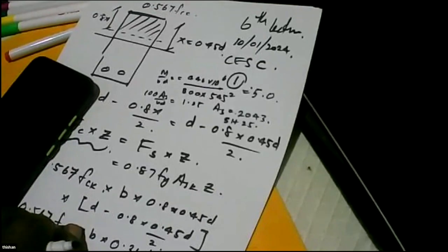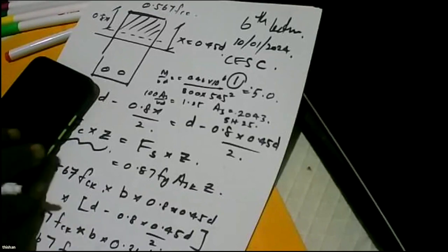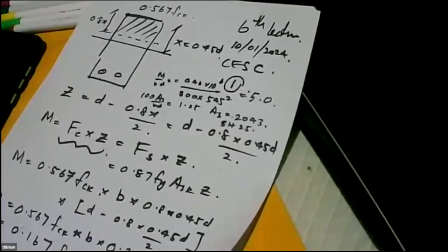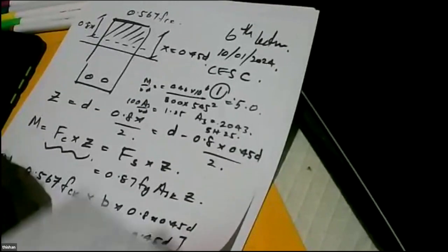Can you believe it? That's the kind of change — that's the amount of steel variation — that can occur when you don't think carefully. So we must always see how to optimize. When you are selecting member sizes, select them in such a way that we optimize what we should optimize.